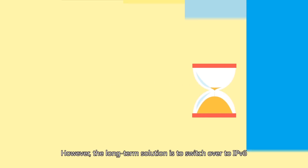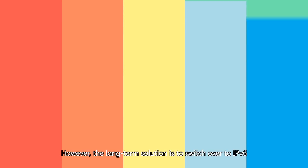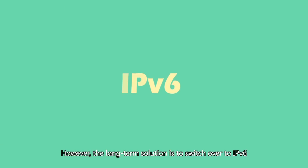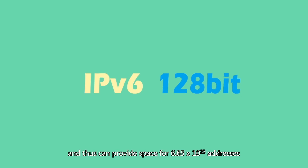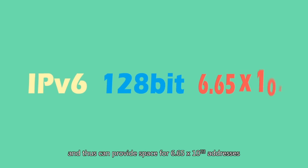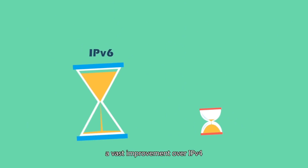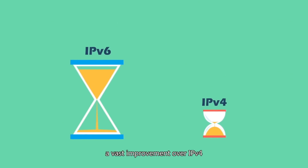However, the long-term solution is to switch over to IPv6, an IP system which uses 128-bit addresses and thus can provide space for 6.65 times 10 to the 23rd addresses, a vast improvement over IPv4.